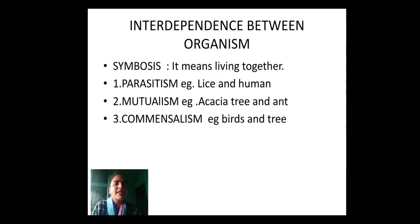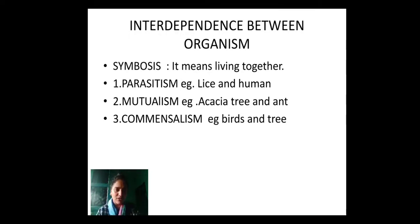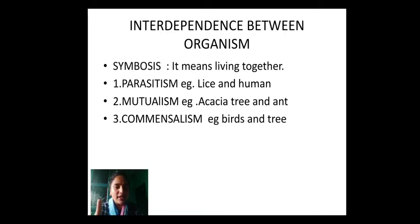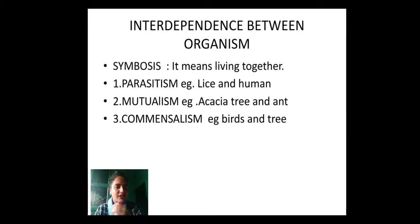Next, we have interdependence between organisms. This chapter is all about interaction between living organisms. Here, one form of interaction is symbiosis — it means living together. Two organisms are in some kind of relationship or association with each other. There are many forms of symbiotic relationship.